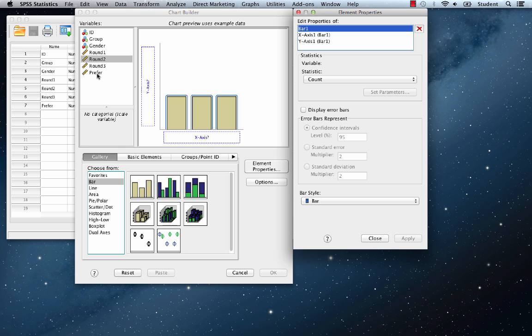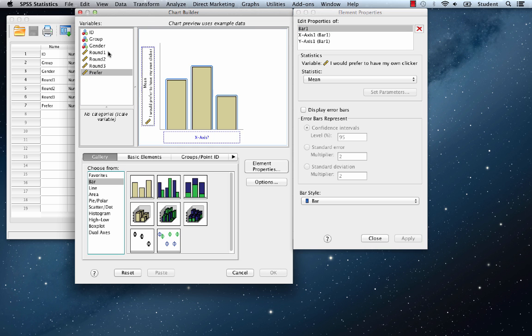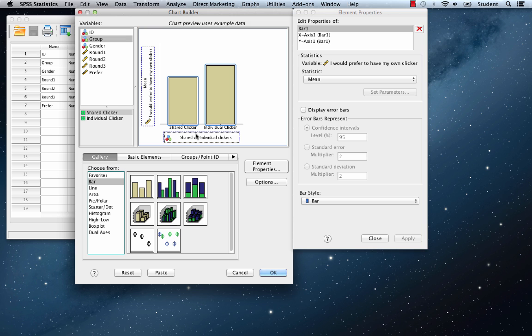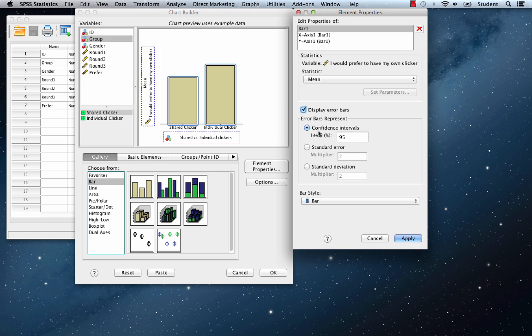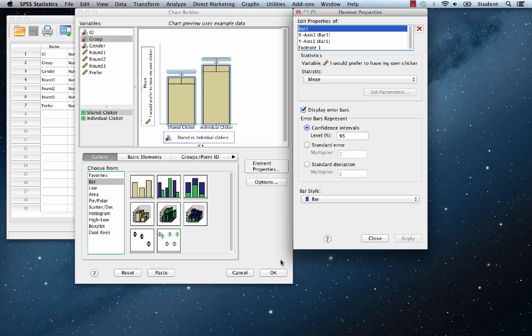This time we're going to drag the variable prefer to the y-axis, and we're going to split it by group. That will go on the x-axis. In the element properties window, let's make sure that mean is selected under statistic. We'll display error bars and leave the confidence interval set to 95%. The bar style is set to bar, so we're ready to go. Click apply and OK.